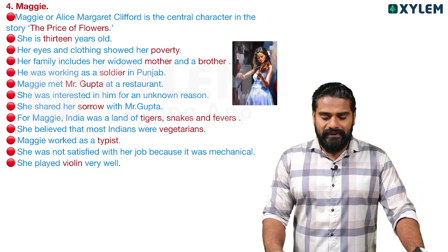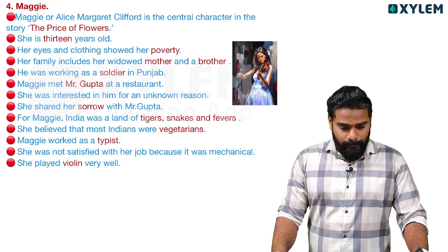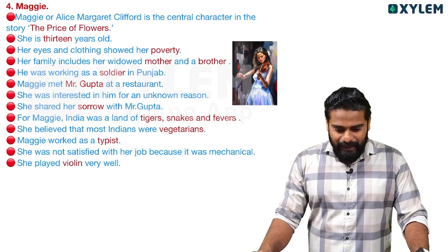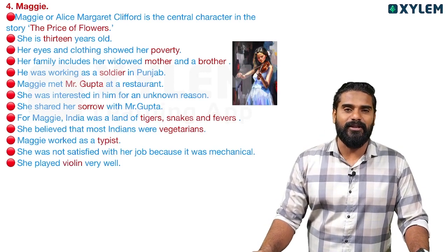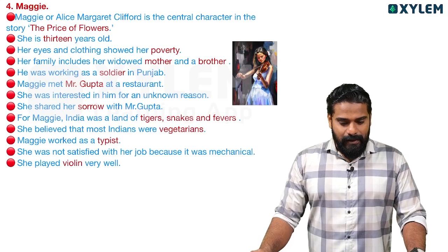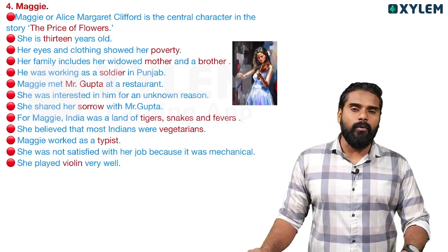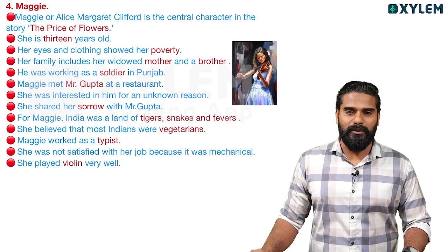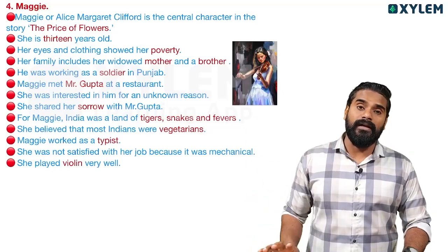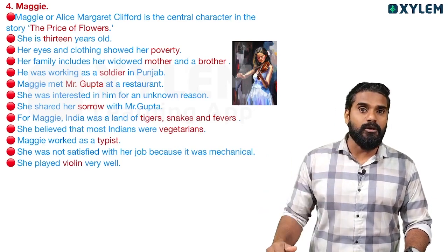She shared her sorrow with Mr. Gupta. For Maggie, India was a land of tigers, snakes and fever. She believed that most Indians were vegetarians. She worked as a typist but was not satisfied with her job because it was mechanical — it was not creative.